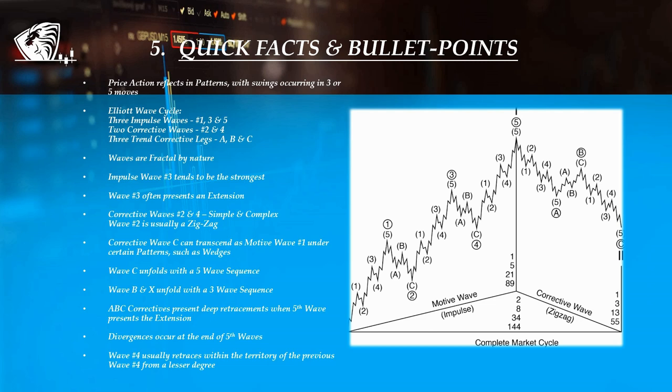For example, in an uptrend, a new high would be created while the volumes would decrease, meaning that bulls push the market higher, but they are not justifying a continuation with enough liquidity, leaving room for bears to take over.